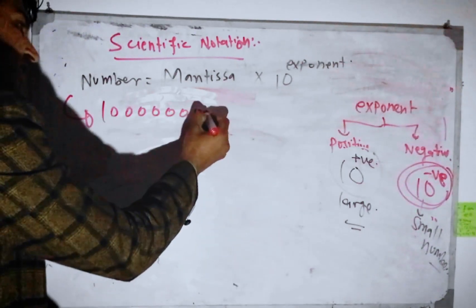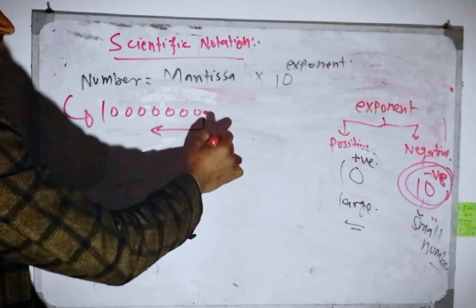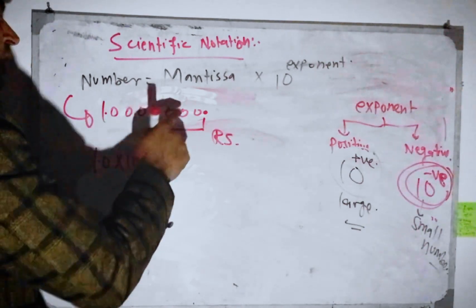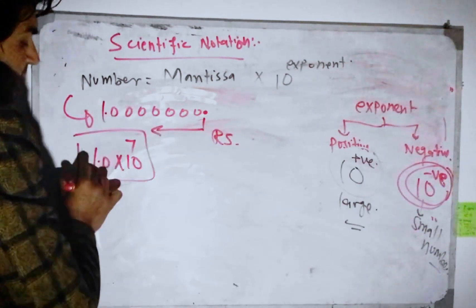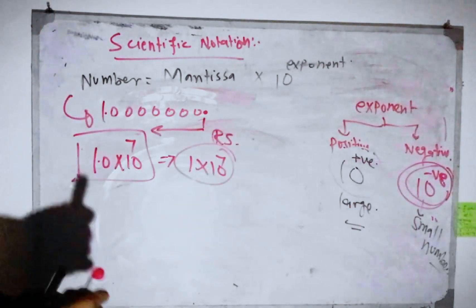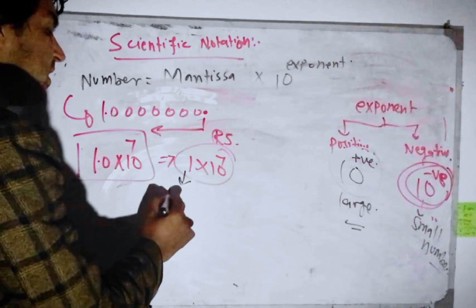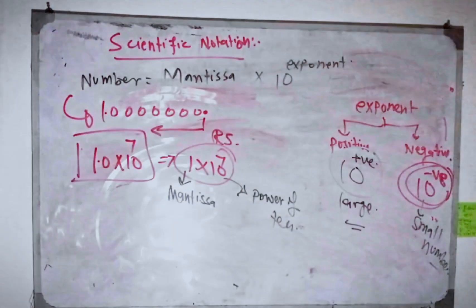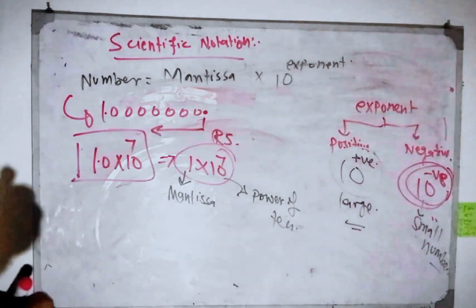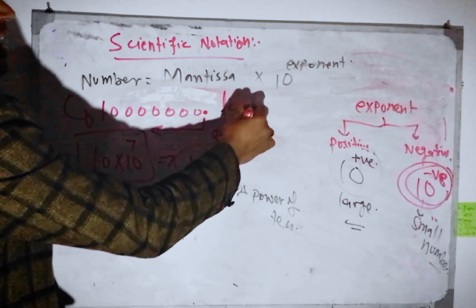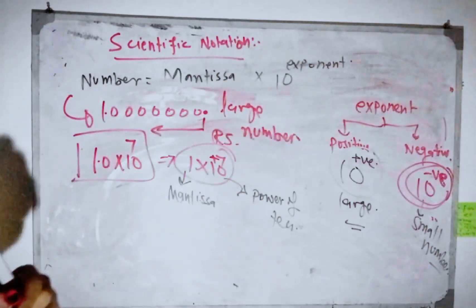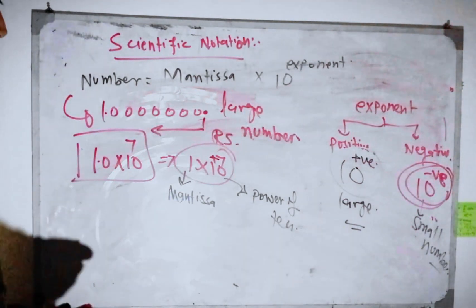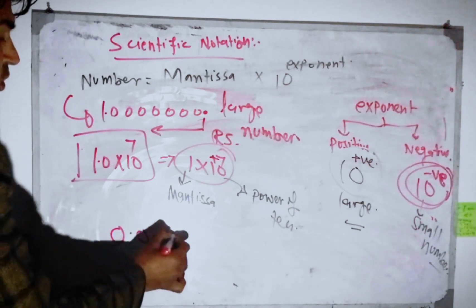For example, suppose the decimal is on the right side: 1.0 multiplied by 10 — counting 1, 2, 3, 4, 5, 6, 7 — gives 1 multiplied by 10 power 7. If we have a negative exponent, the power is negative, meaning the number is very small. For example, power positive would give 0.00000000001.